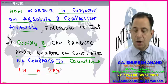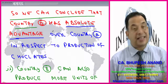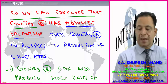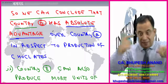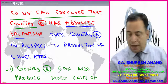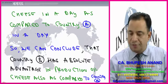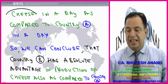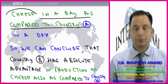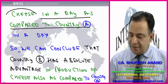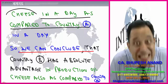Country B can also produce more units of cheese in a day compared to country A — 5.5 versus 5 units. So we can conclude that country B is enjoying absolute advantage in cheese as well.